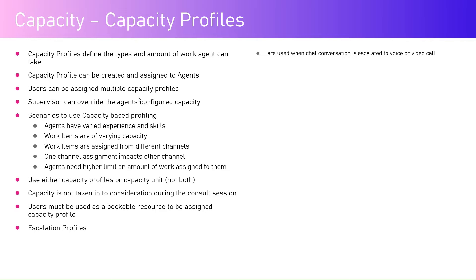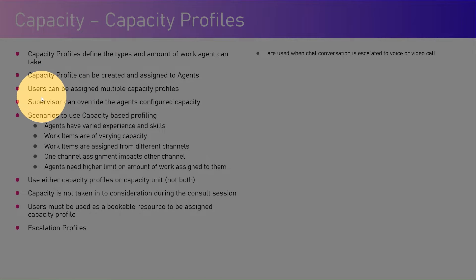This profile is defined so that the user does not get burned out while doing this exercise. You can't push 100 tickets to a user in a day — the agent will get burned out. You need to specify some sort of limit so that all your work arrangements are properly streamlined. Users can be assigned multiple capacity profiles, and a supervisor can override the agent's configured capacity.